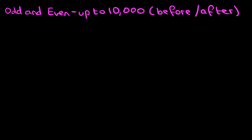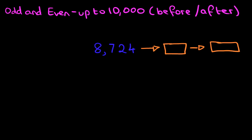So let's have a look at our first question. Suppose we have this number, 8,724. And the question that is being asked is: what are the next two odd numbers? So what are the two odd numbers after 8,724?